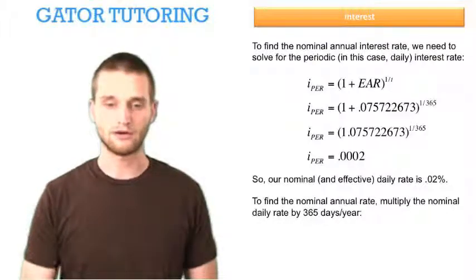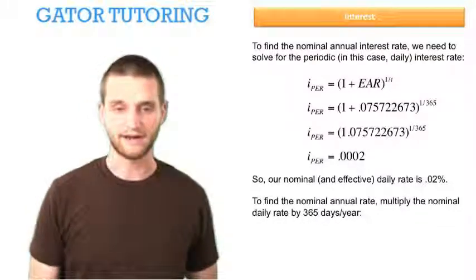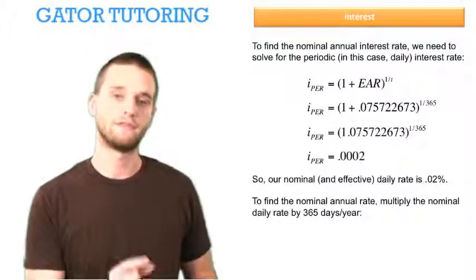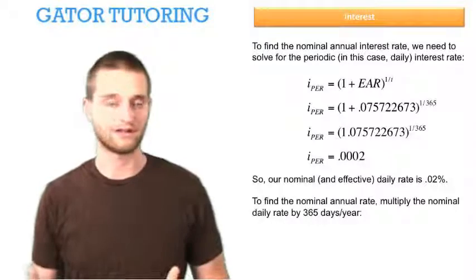To find the nominal annual rate, multiply the nominal daily rate by 365 days a year. The nominal rate is just the sum of the periodic rate over the course of the entire year.